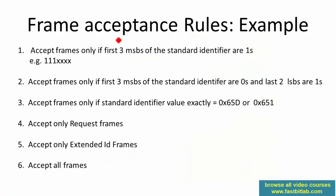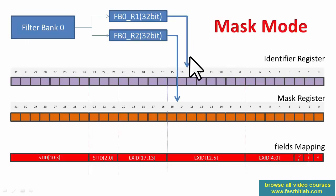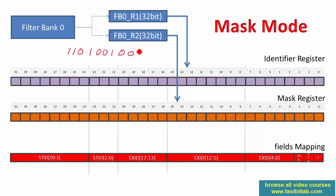Let's explore how acceptance filtering works with an example. Accept frames only if the first three MSBs of the standard identifier are ones. We'll use filter bank zero — there are 28 filter banks total. Each filter bank comes with two filter registers: R1 and R2, both 32-bit. A message comes into the CAN Rx and its standard identifier is, say, 1 1 0 1 0 0 1 0 0 0 1 — eleven bits total.